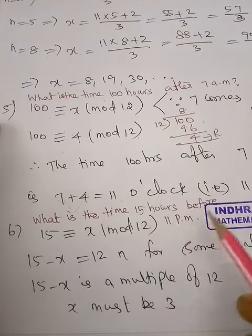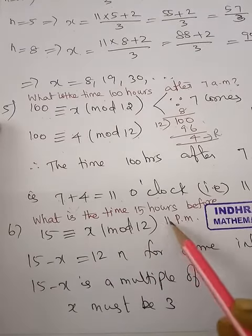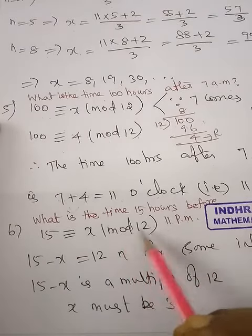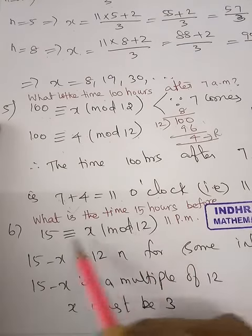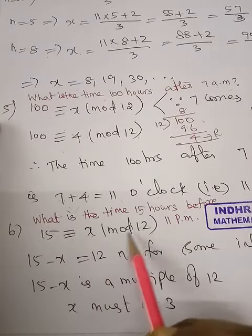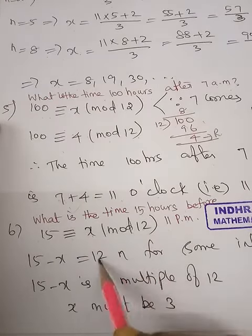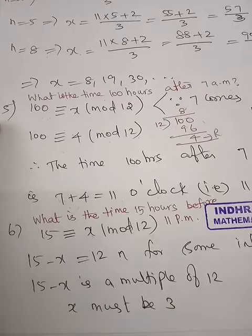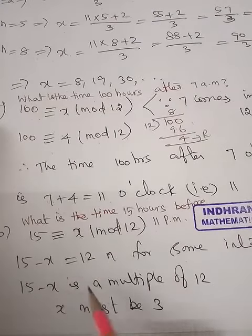In modulo 12, once it reaches 12 on the clock, 15 is congruent to x modulo 12. 15 minus x is a multiple of 12, that is 12n for some integer n. 15 minus x must be a multiple of 12.